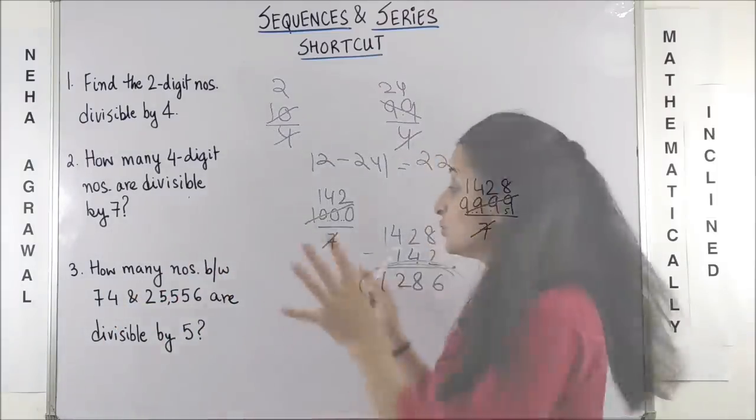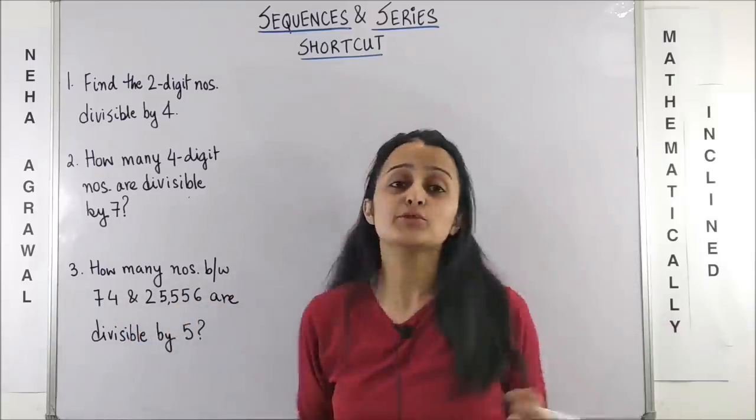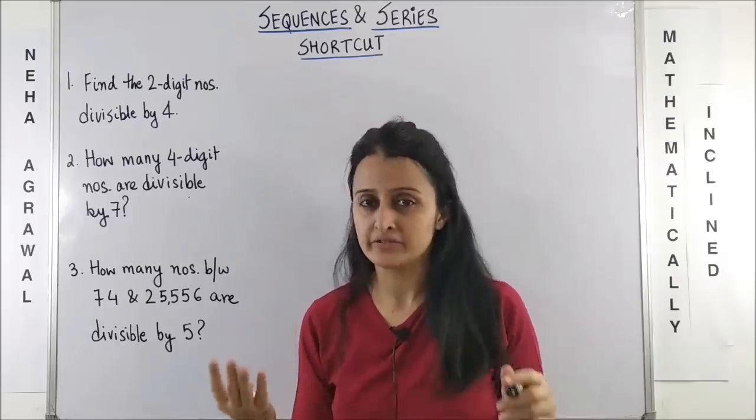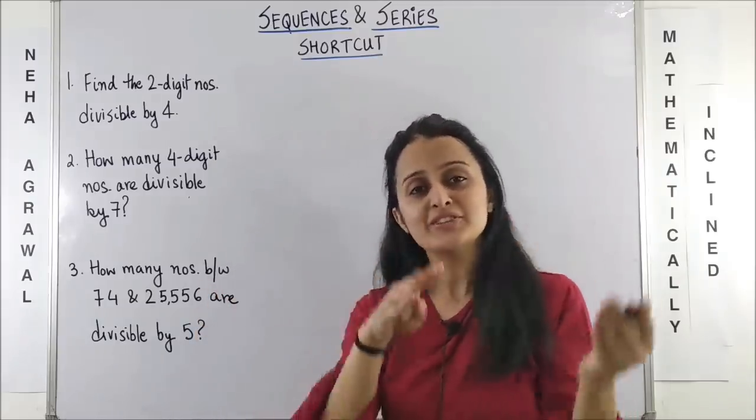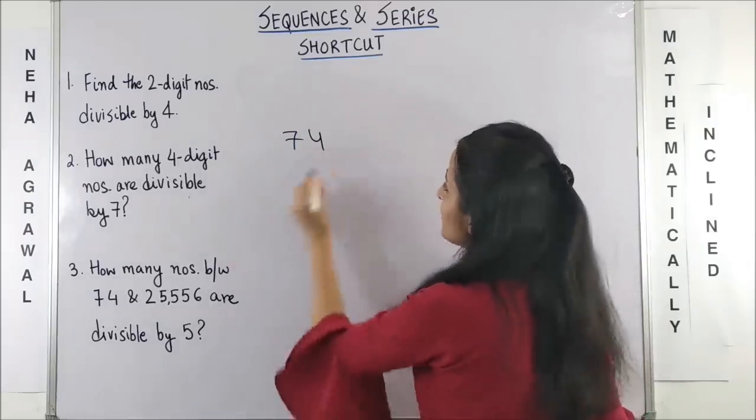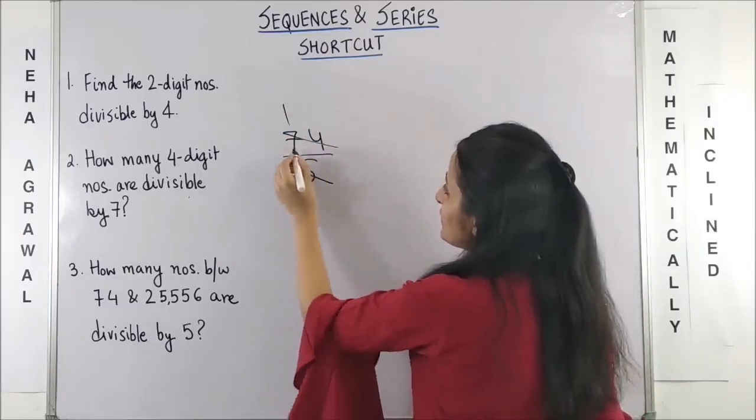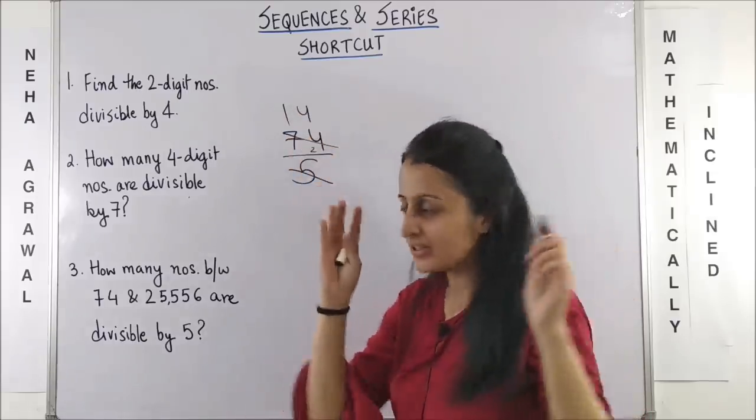Same jadu with the last one. How many numbers between 74 and 25,556? Sounds so weird. But trust me, this trick will also work here. So if I have 74 divided by 5, this gives us 5, 1s are 5. And here, we have 5, 4s are 20. Forget about the remainder.